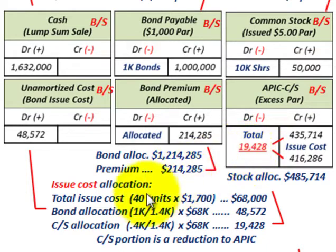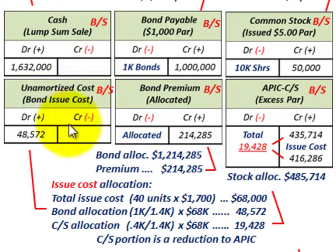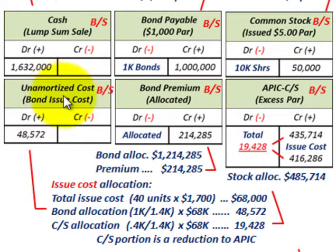For the bond, we allocated $48,572 in issue costs. In the case of bonds, we have to set up an unamortized bond issue cost as an asset on the balance sheet — capitalizing it. We debit that asset for $48,572. This becomes a capitalized amount for bond issue costs, which will then be amortized down over the life of the bond.